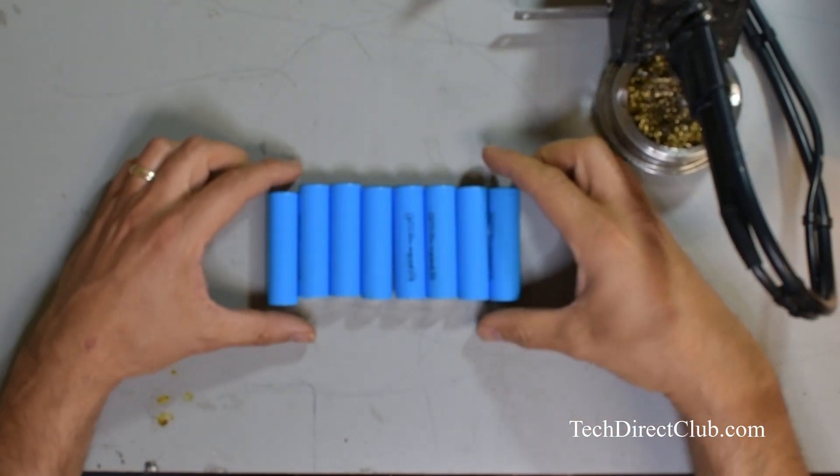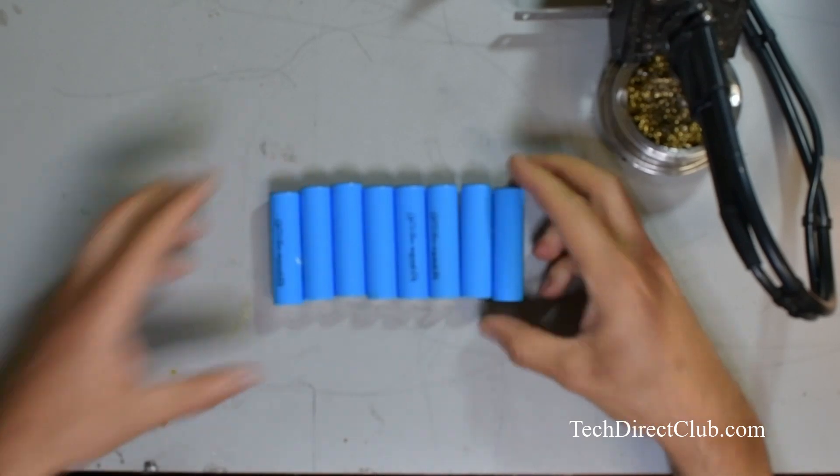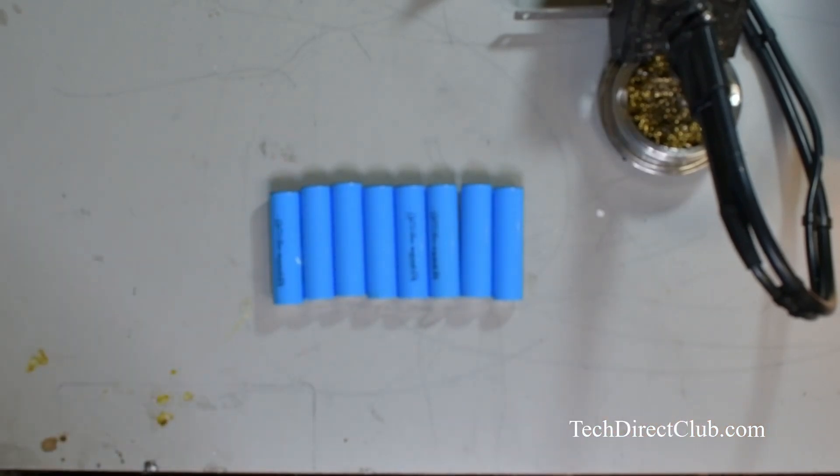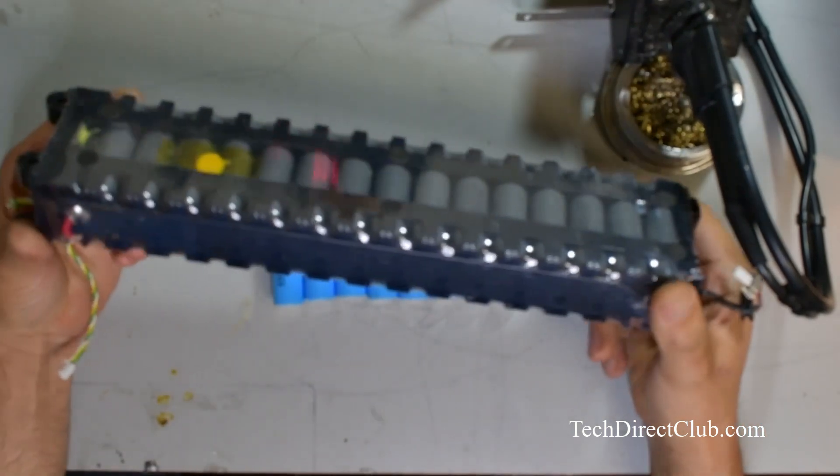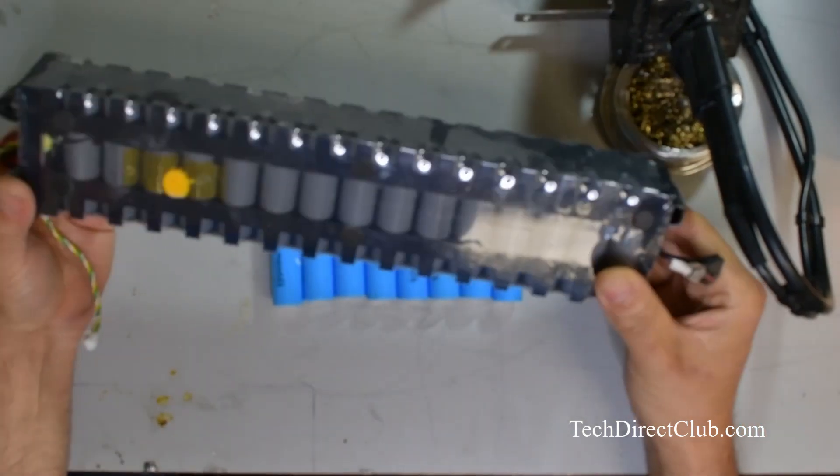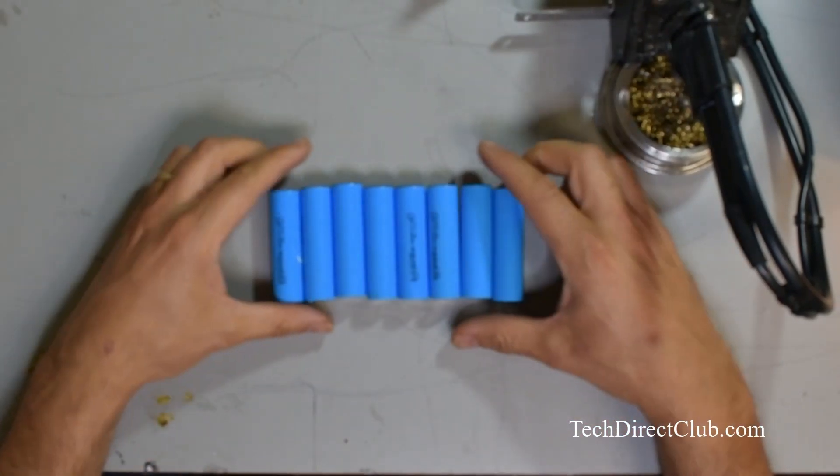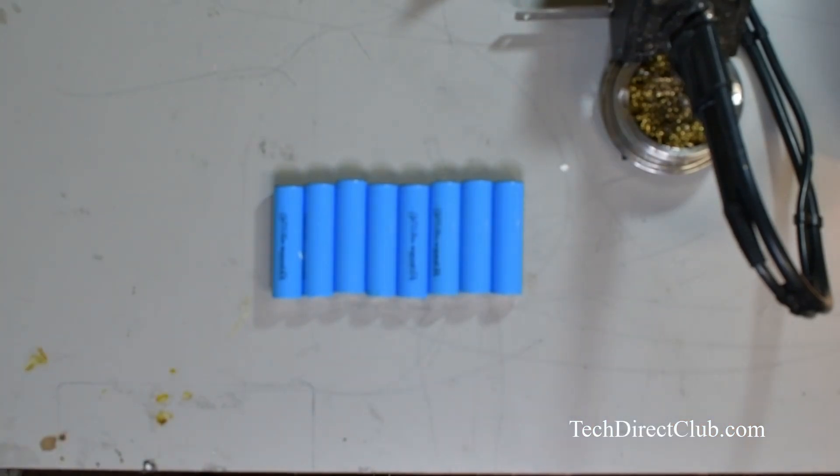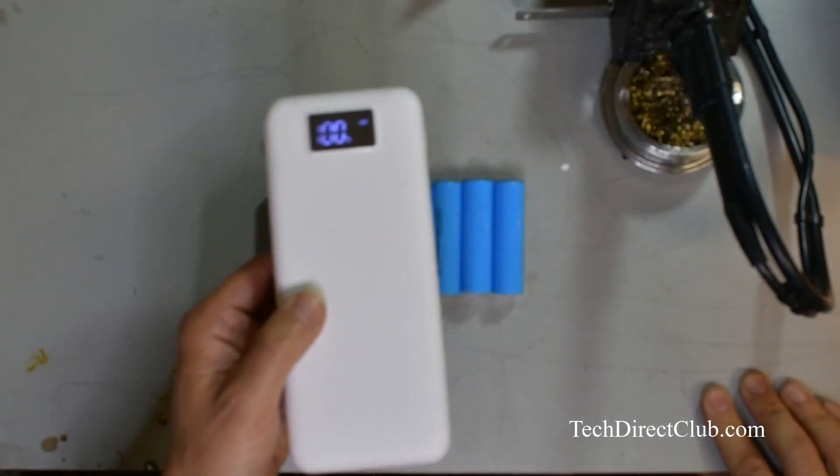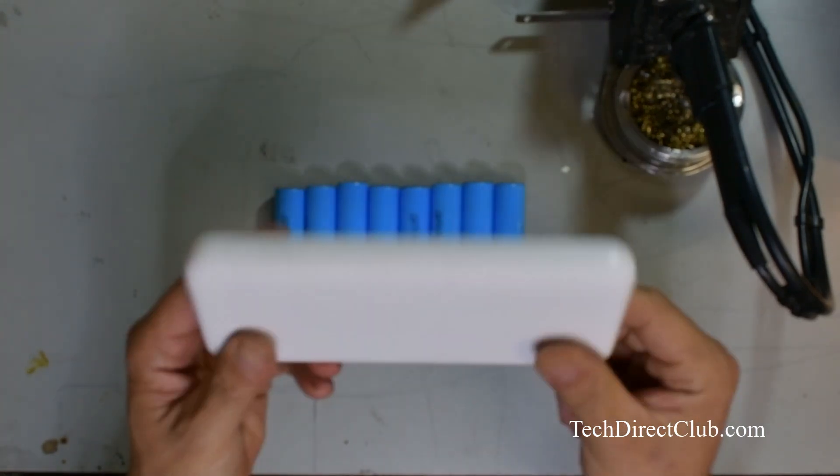Hello everyone, if you remember last time we used the Bird scooter to cut this. Last time we took it apart and we harvested the cells. Now this is another example of the cells that we have, so today I'm going to make a power bank.